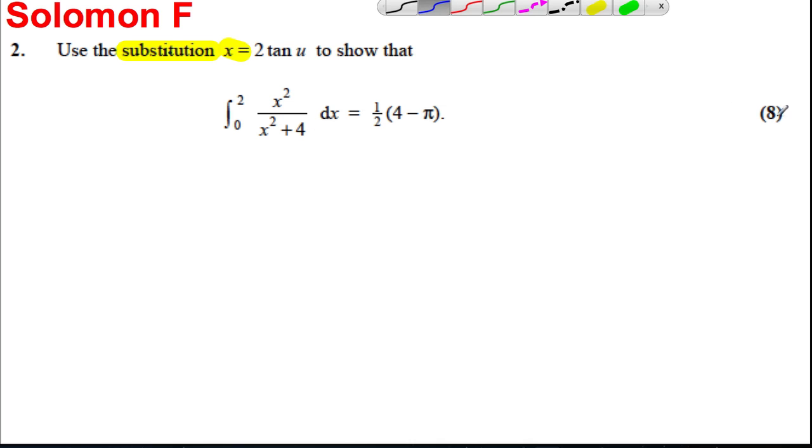Firstly, get some easy marks out of those eight by changing your limits. If x is equal to zero in this case, then we would have that zero is equal to 2tan(u). We would therefore be solving tan(u) is equal to zero, and u is the inverse tan of zero. And if you do that, you get zero.